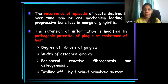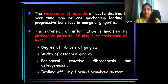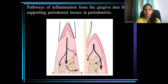One of the major factors influencing this extension of inflammation to the underlying tissue is the width of attached gingiva. In areas where there is adequate attached gingiva, this extension of inflammation to the underlying tissues is controlled. The presence of attached gingiva prevents the extension of inflammation into the underlying tissues. These are the different ways by which gingival inflammation extends into underlying bone.